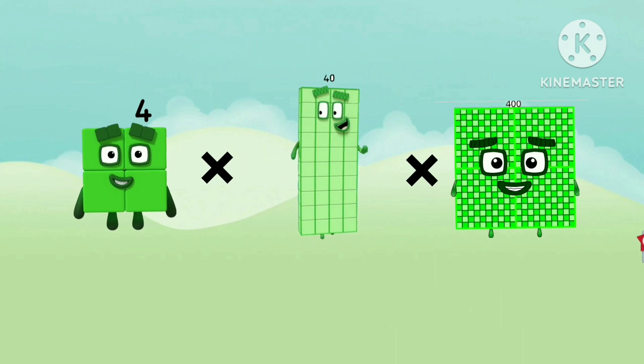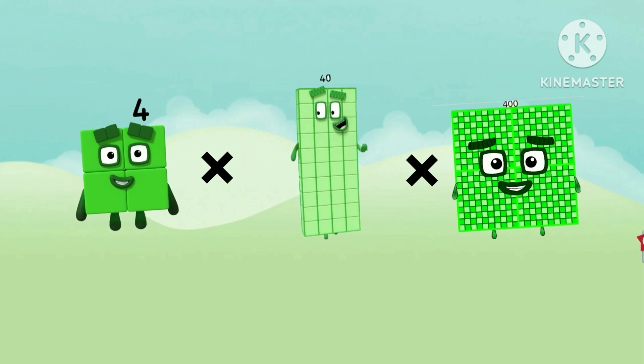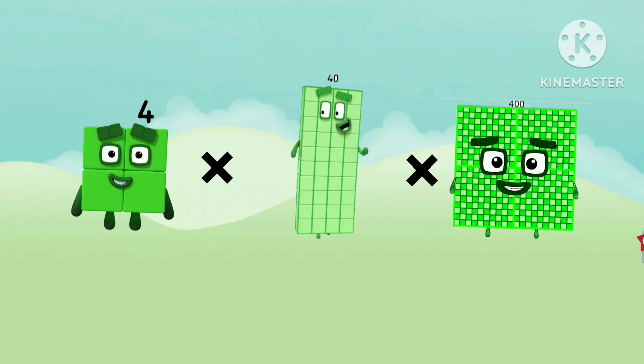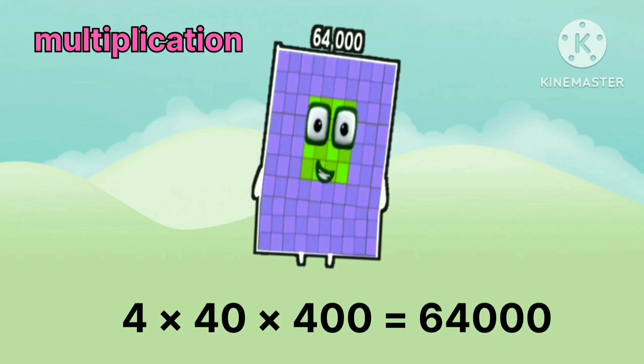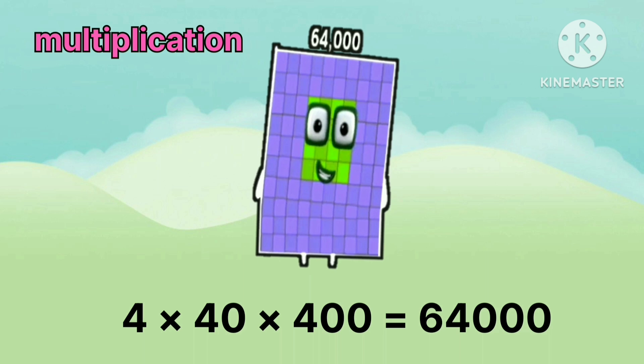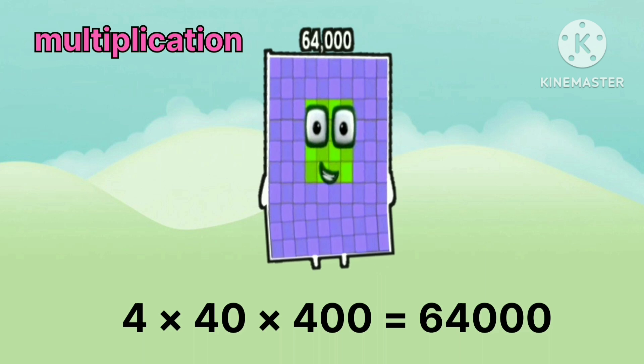4. Multiply by 40. Multiply by 400. Equals 64000.